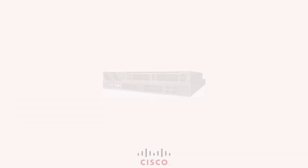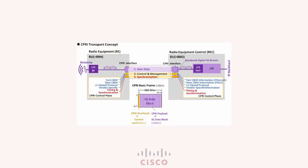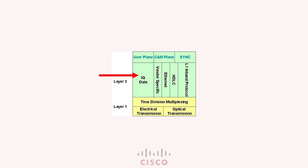Moving to the spec — this is how they define the CPRI interface. It is a digitized base station interface between the REC (the radio equipment controller, which is the control unit or the baseband unit) and the RE (the radio unit). That interface, as you can see, is multiplexing a lot of information — user data, control and management, and synchronization are all pushed together through that interface. Our focus for the rest of the videos in this series will be on the IQ data between the RE and the REC.